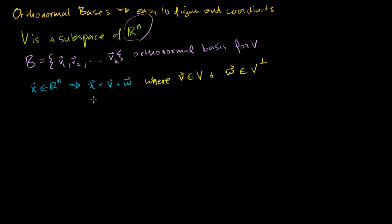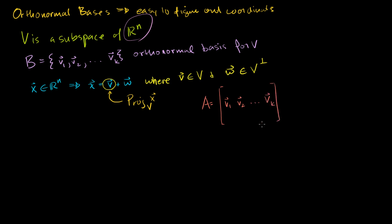We saw this when doing the videos on orthogonal complements. By definition, that component v is the projection of x onto V, and w is the projection of x onto V's orthogonal complement. We know this is not an easy thing to find. If I set up some matrix A that has my basis vectors as the columns — V1, V2, all the way to Vk — we learned that the projection of any vector x onto V equals A times (A transpose A) inverse times A transpose times x. And this was a pain to figure out.